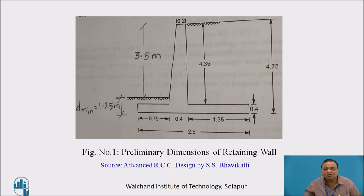First of all, we have to assume the preliminary dimensions. These are assumed based on some thumb rules. Top width is assumed as minimum 150 mm. We have assumed 200 mm here, 0.2 meter. This is taken as H by 12, where H is 4.75 meter.